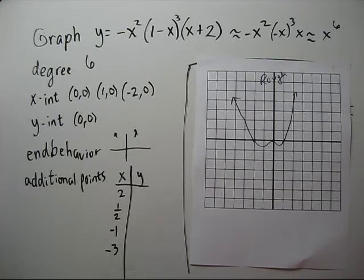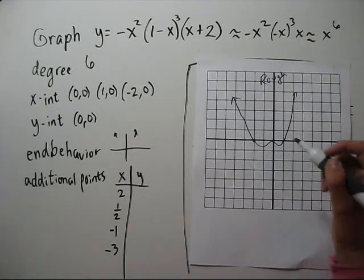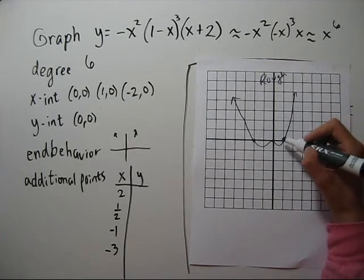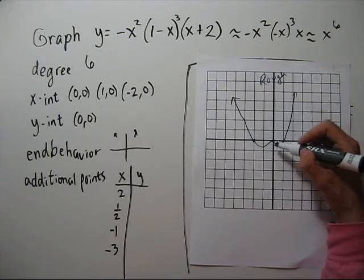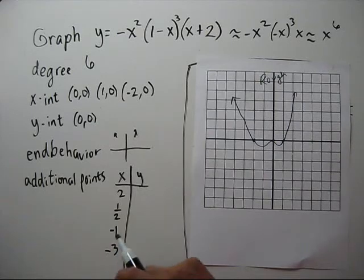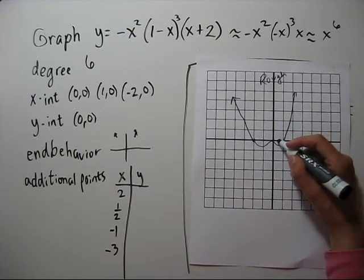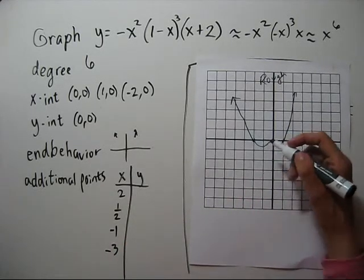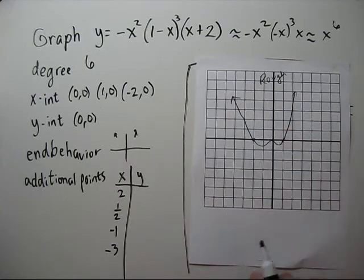Some additional points to plot would be ones that help us fill in how far down we go and how steeply this is rising on the end. So maybe two, a half, a negative one, and a negative three would be good to try.